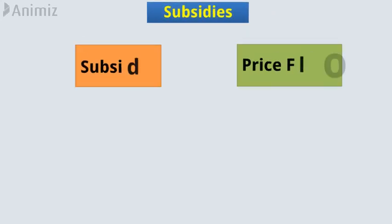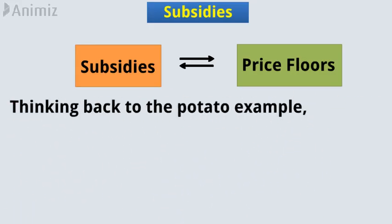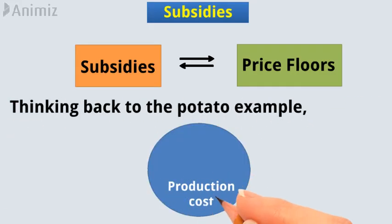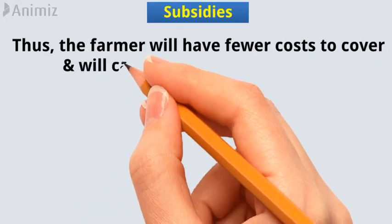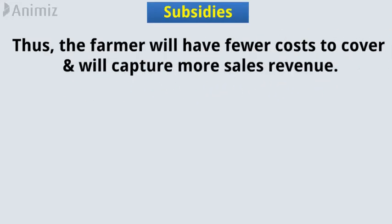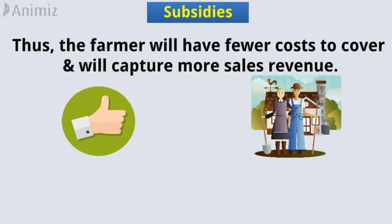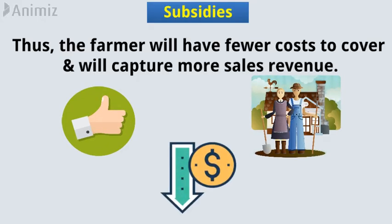Subsidies. We can think of subsidies as an alternative to price floors. Thinking back to the potato example, a subsidy will cover a certain portion of production costs for a farmer. Thus, the farmer will have fewer costs to cover and will capture more sales revenue. This will ensure that the farmer can still afford a living even if the equilibrium price of potatoes ends up being very low.